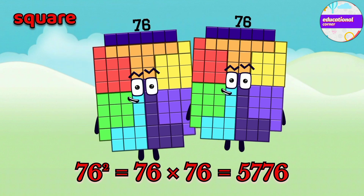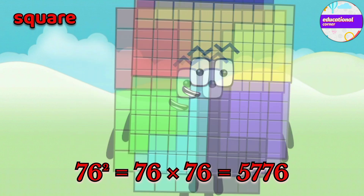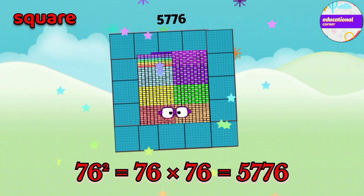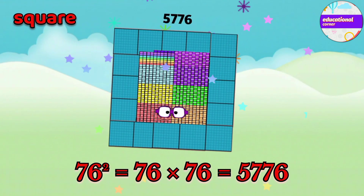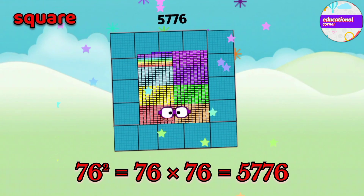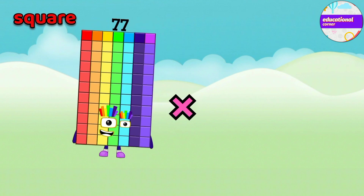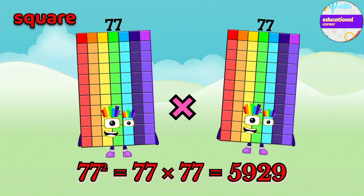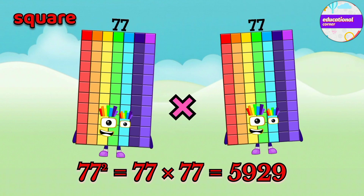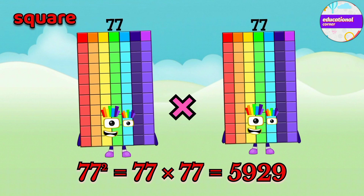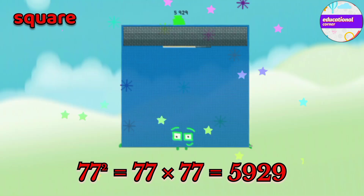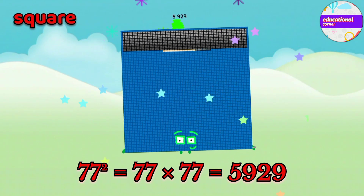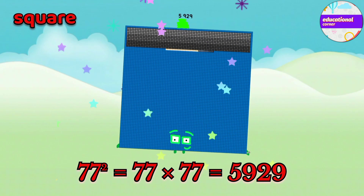The square of 76 is 5776. 77 multiply by 77. The square of 77 is 5929.